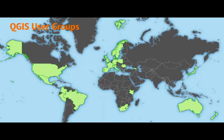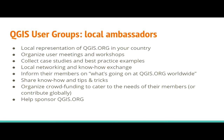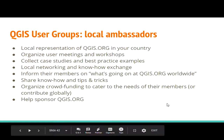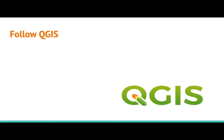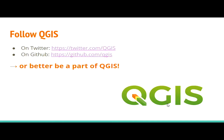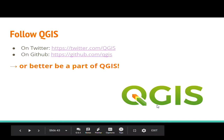At the very end, I'd like to mention user groups — our local ambassadors. If your country is not yet represented, maybe you can start an initiative and create a local user group. They organize user meetings and workshops, and they are a contact point with the central QGIS organization. We invite you to follow QGIS on Twitter and GitHub, but better yet, be an active part of QGIS rather than just a passive follower.